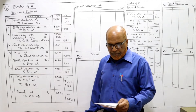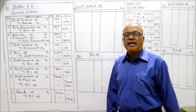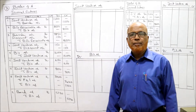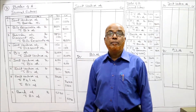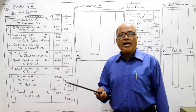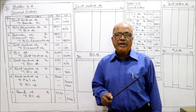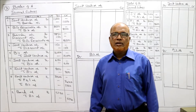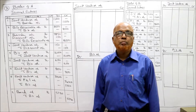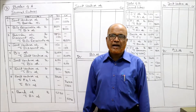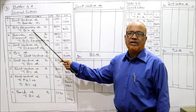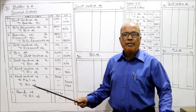Second entry: B received the consignment and immediately accepted the draft drawn by A. A has drawn a bill of exchange on B, B has accepted and returned that bill to A. The entry in the books of A is: Bills Receivable Account Dr. to B's Account - being the acceptance of B received - 8,000.